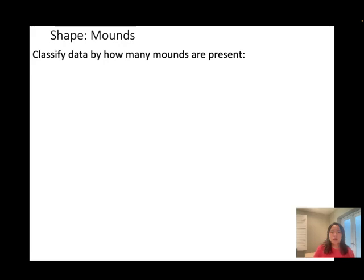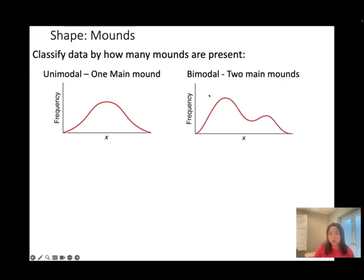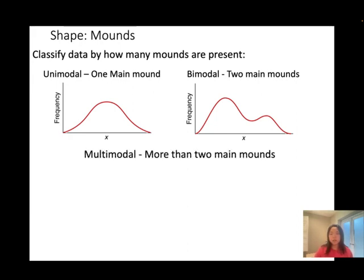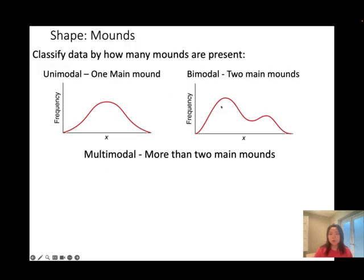The second characteristic is modes — classifying data by how many modes are present. Unimodal means one main peak, which is typical of a normal distribution. Bimodal means two main peaks. Multimodal means more than two peaks. Keep in mind that modes can be different heights — a bimodal distribution can have two peaks of different heights.